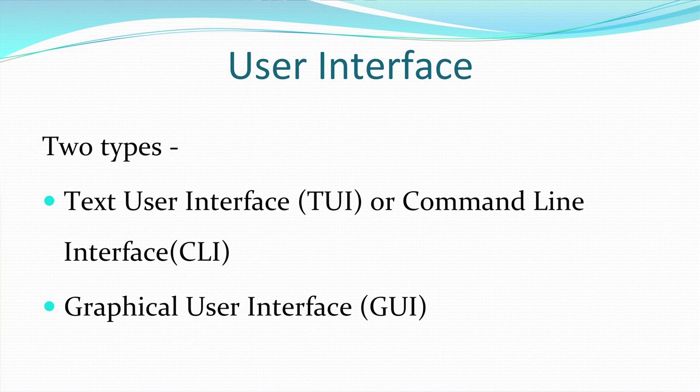The next function is user interface. An operating system acts as an interface between you and your computer hardware. There are two types of user interfaces: the text user interface, also called the command line interface, and the graphical user interface. In a text user interface, every command has to be typed at the command prompt, and then after pressing Enter, the respective task is performed. The means of input is only the keyboard.